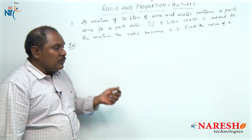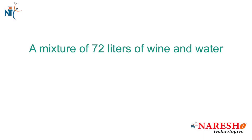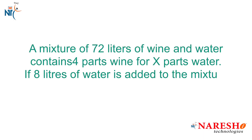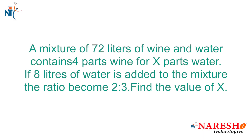Let us look into the problem. A mixture of 72 liters of wine and water contains 4 parts wine for x parts water. If 8 liters of water is added to the mixture, the ratio becomes 2 is to 3. Find the value of x.